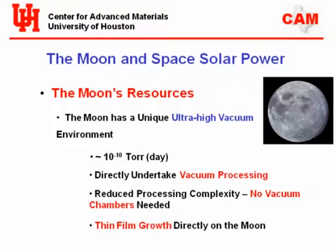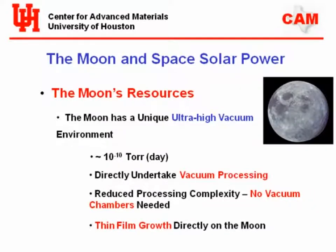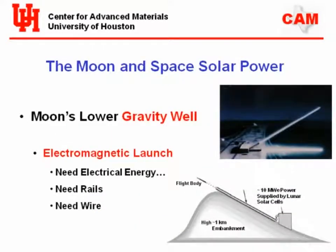You should know the Moon is an ultra-high vacuum — about 10⁻¹⁰ Torr, where a Torr is one millimeter of mercury. When Apollo landed and took off, it tripled the atmosphere of the Moon. Thin film solar cells are deposited in vacuum chambers so you don't contaminate the layers with contaminants that prevent the solar cell from functioning. But I don't need a vacuum chamber on the Moon — the whole Moon is a vacuum chamber. So we could directly grow thin film on the Moon without a vacuum chamber.